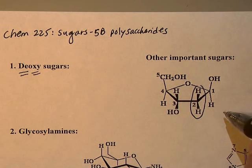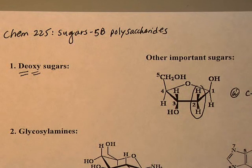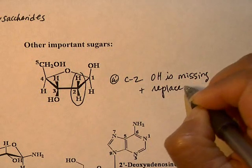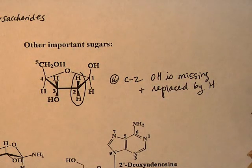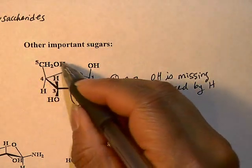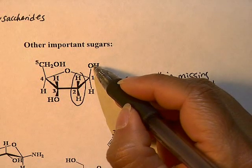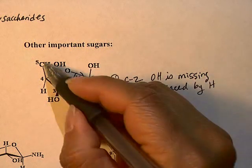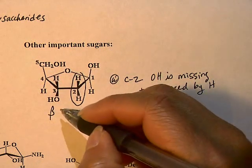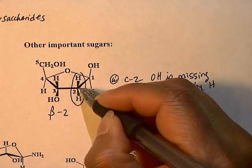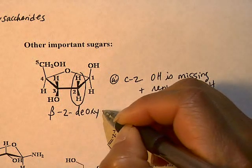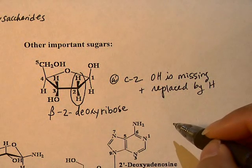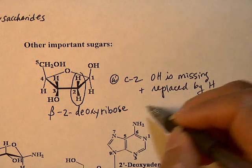That's why they're called deoxysugars — at C2, the OH is missing and replaced by hydrogen. This is a five-member ring, and notice the anomeric carbon OH is on the same side as the CH2OH, so it's beta. At the second carbon, the OH is missing, so that's why it's deoxy. This sugar, a five-member ring called ribose, is named beta-2-deoxyribose, and it is prevalent in DNA.